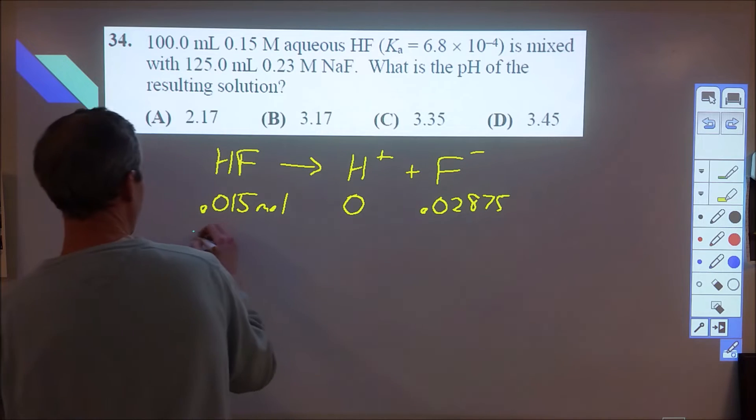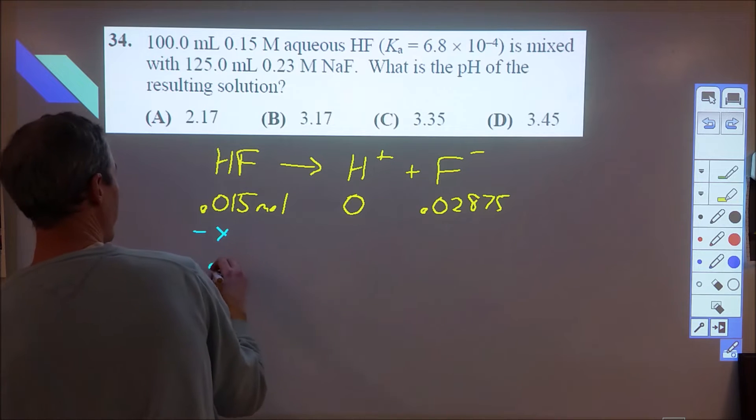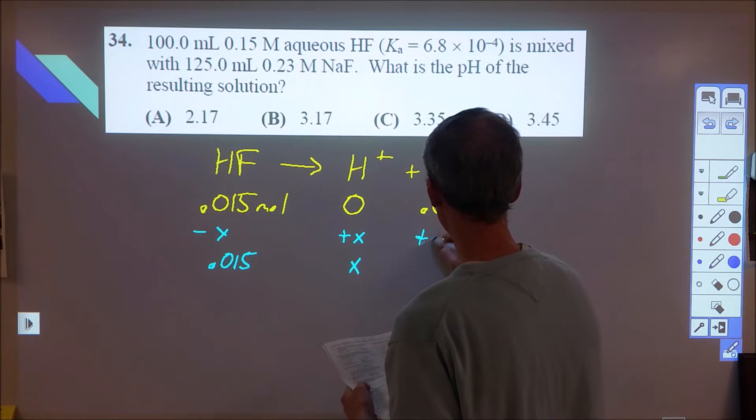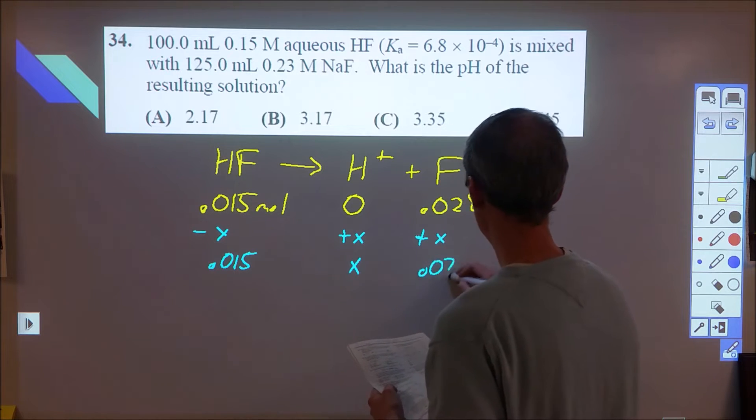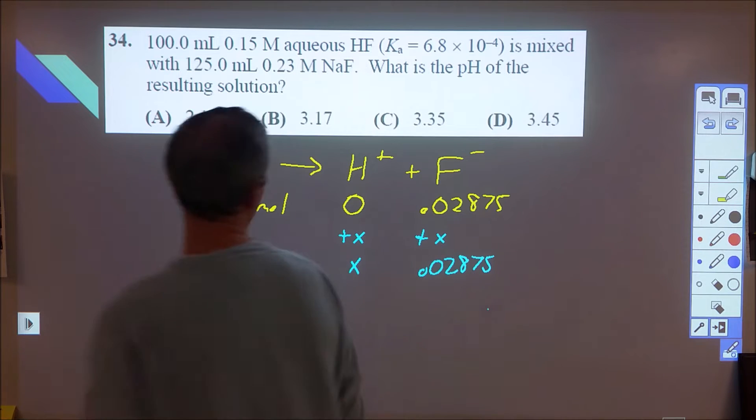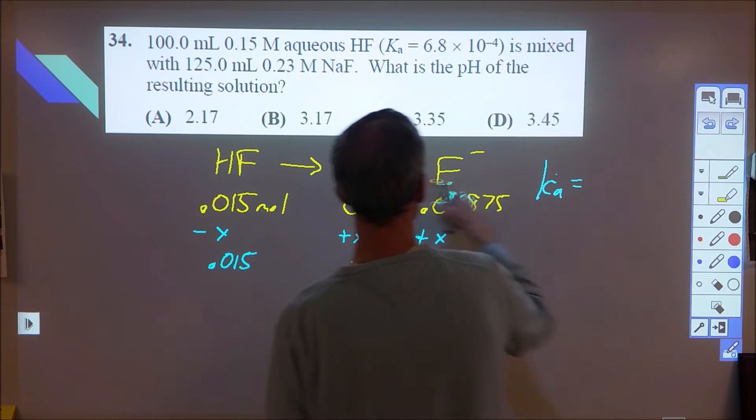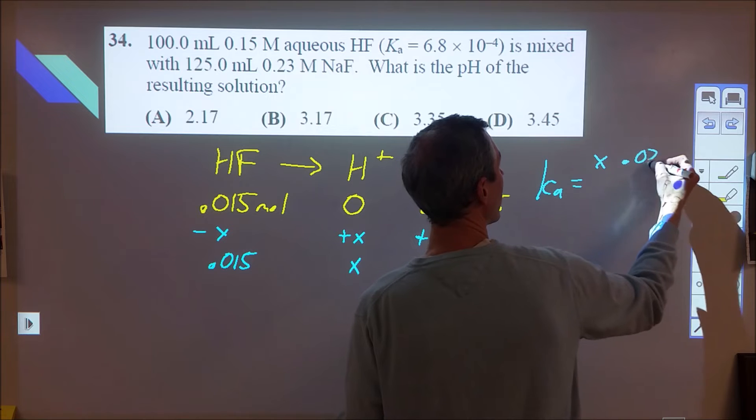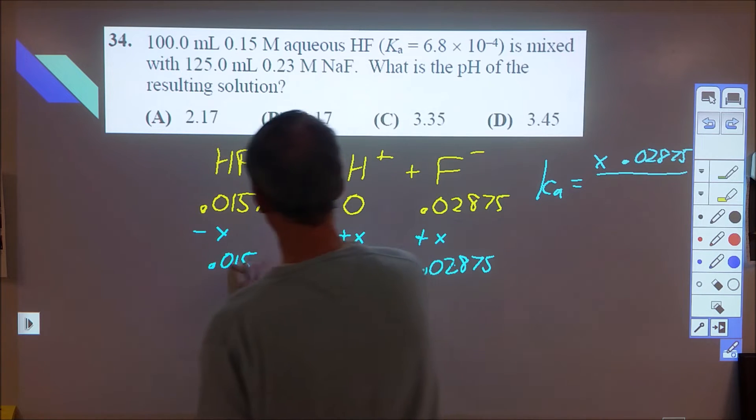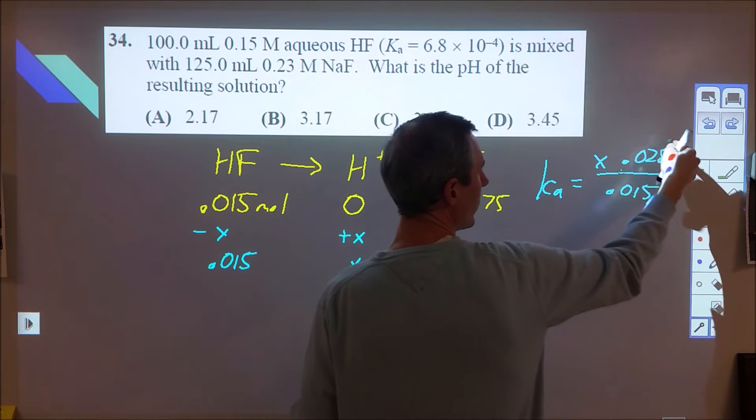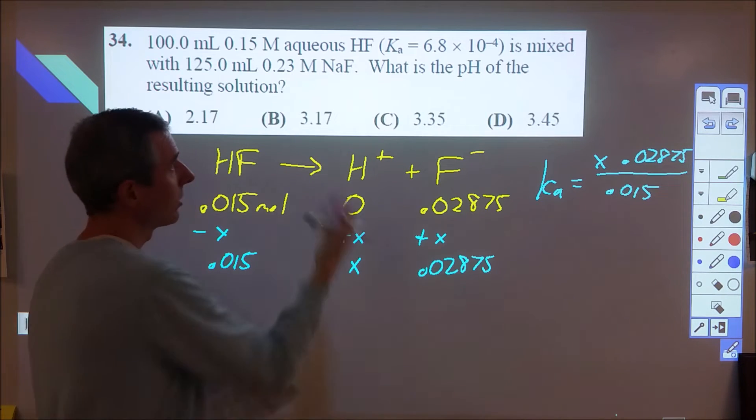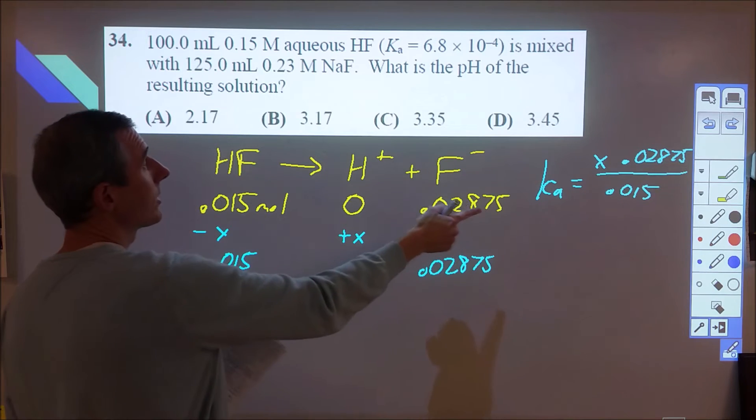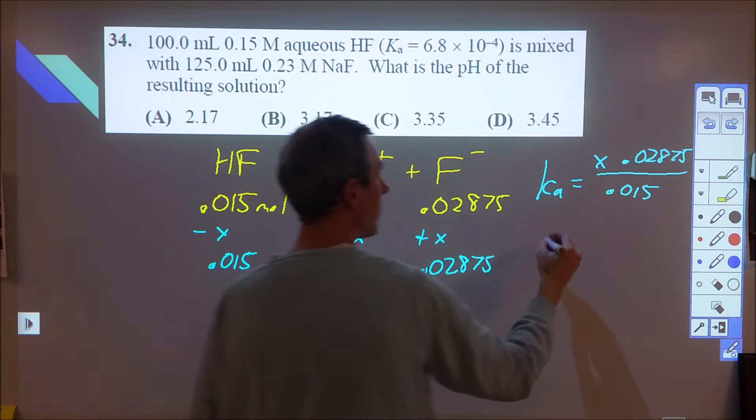Okay, so then this is going to decrease, and we're going to ignore the minus x, we're going to put 0.015. This is going to increase, we're going to end up with x. And this is going to increase as well, but we're going to ignore that because those changes are going to be so much smaller relative to those two values. We can then plug in our K is equal to our H plus, which is x, times our 0.02875 relative to our 0.015. So keep in mind here, normally to change this into concentration, I would have divided both of those by the total volume of solution. Since I'm doing that here and here, I don't have to do it. So I can take this and I can plug in the Ka now, 6.8 times 10 to the negative 4th, and solve for x.